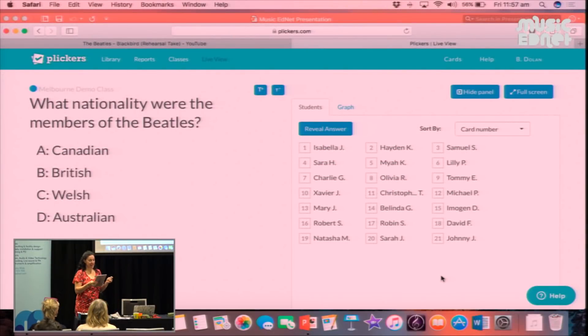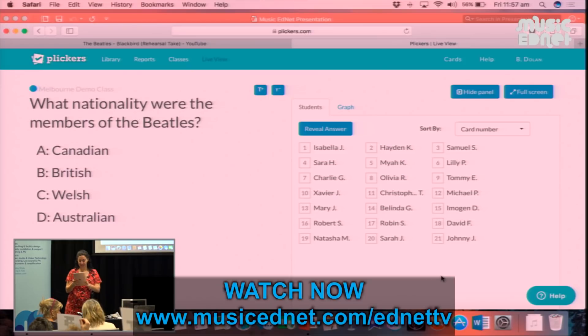What nationality were the members of the Beatles? Were they A Canadian, B British, C Welsh or D Australian?